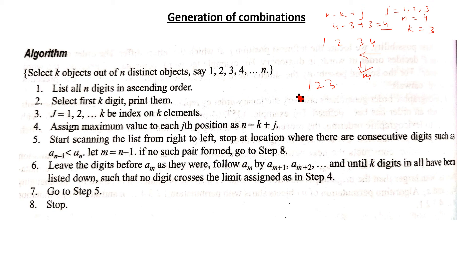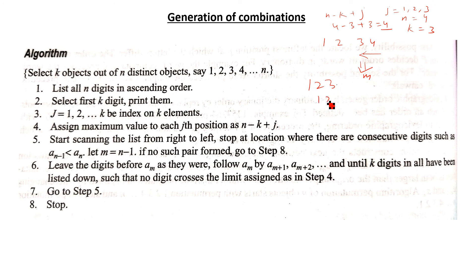Otherwise, leave the digits before a_m as they were, and follow a_m by a_{m+1}, a_{m+2}, and so on until k digits in all have been listed. Ensure that no digit crosses the maximum limit assigned as n minus k plus j. We have 1, 2, 3, 4 already listed; next element would be 4.